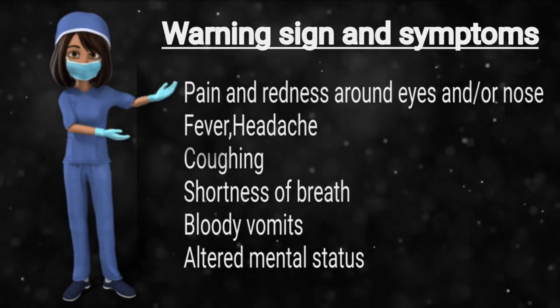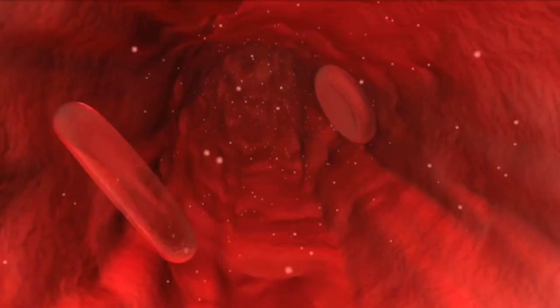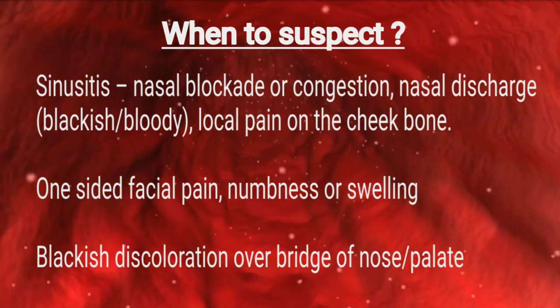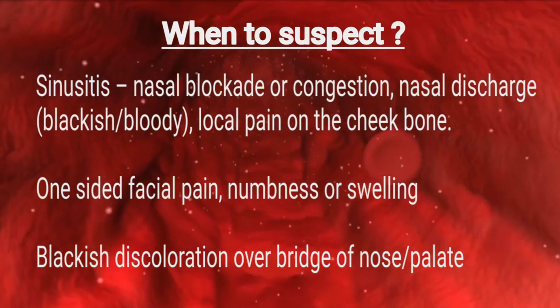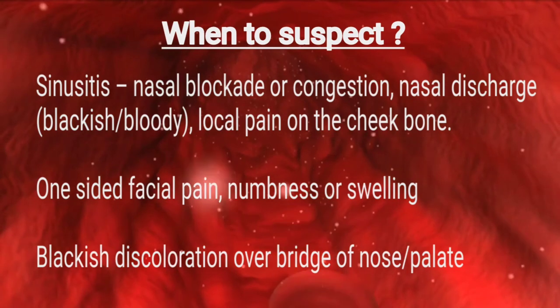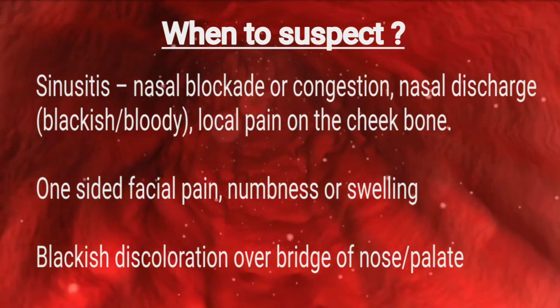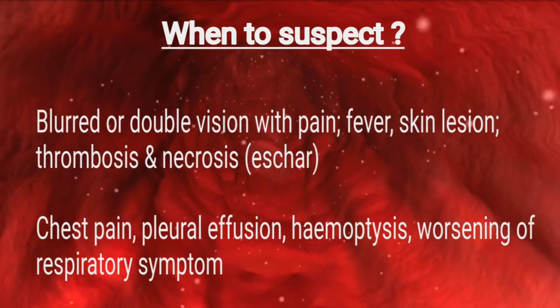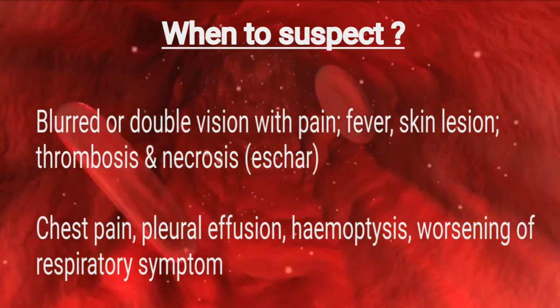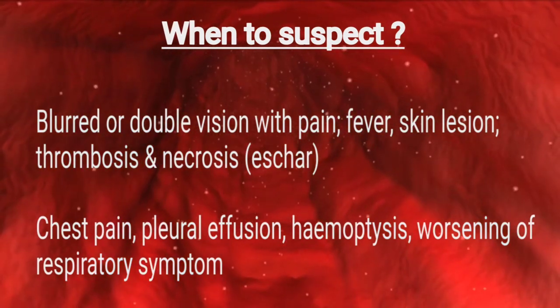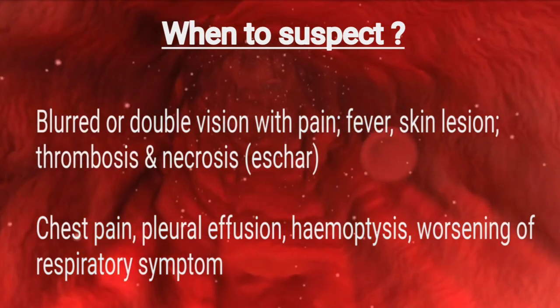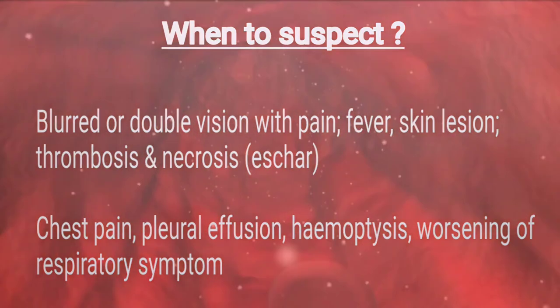When to suspect mucormycosis: nasal blockade or congestion, nasal discharge, blackish or bloody discharge, local pain on the cheekbone, one-sided facial pain, numbness or swelling, blackish discoloration over bridge of nose or palate, blurred or double vision with pain, fever, skin lesion, thrombosis and necrosis, eschar, chest pain, pleural effusion, hemoptysis, and worsening of respiratory symptoms.